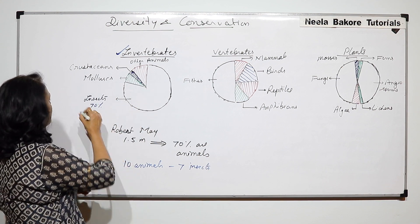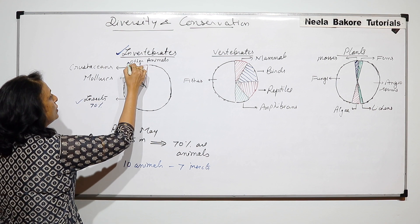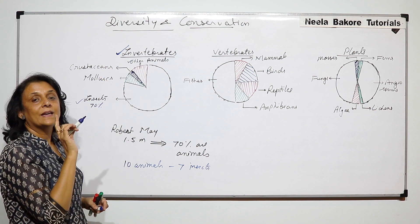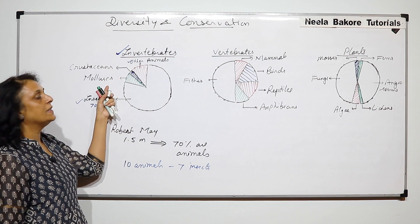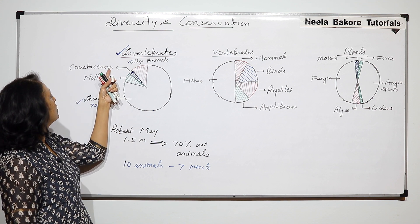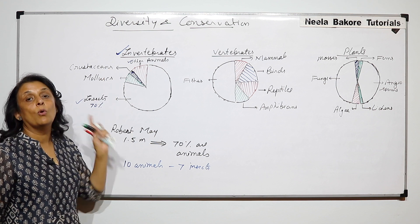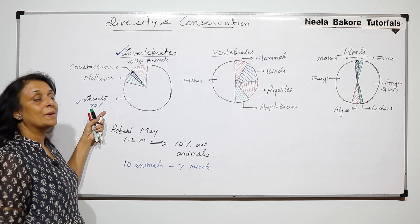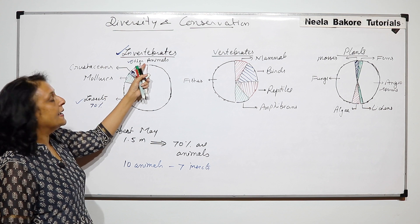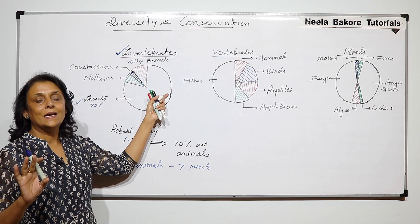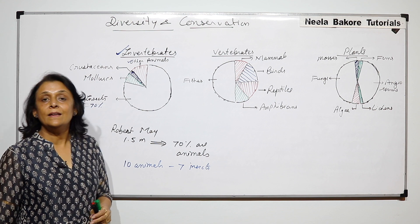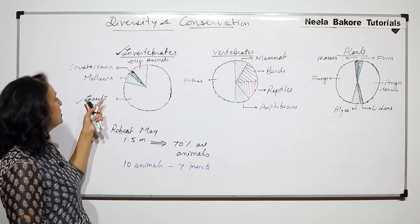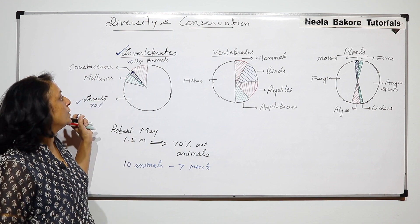Maximum number is of insects followed by other animals, and others include all those excluding crustaceans and mollusks. So maximum number is of insects, then all other animals, after that is the mollusk and then the crustaceans. Crustaceans are the least amongst invertebrates.